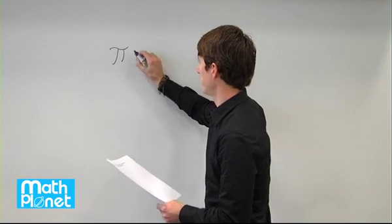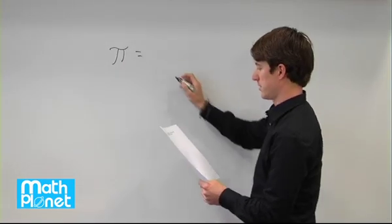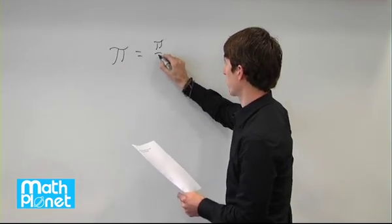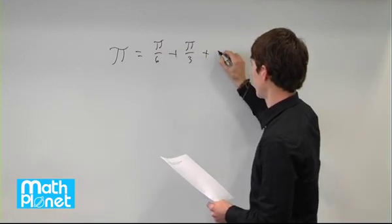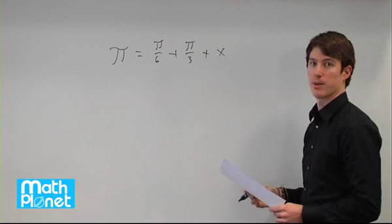So the total is pi and that is pi over 6 plus pi over 3 plus our unknown variable here, x.